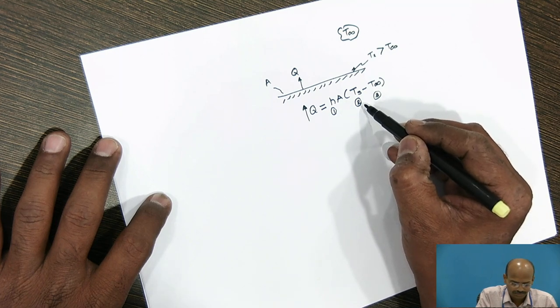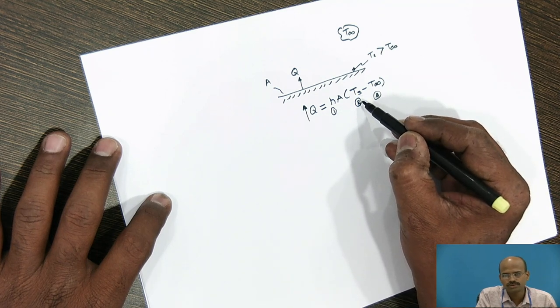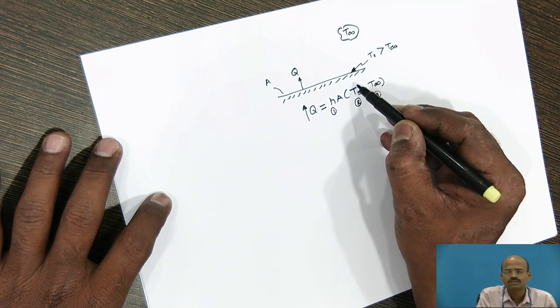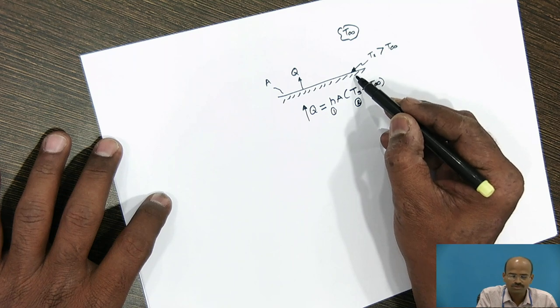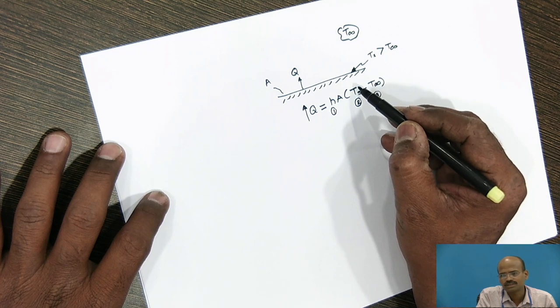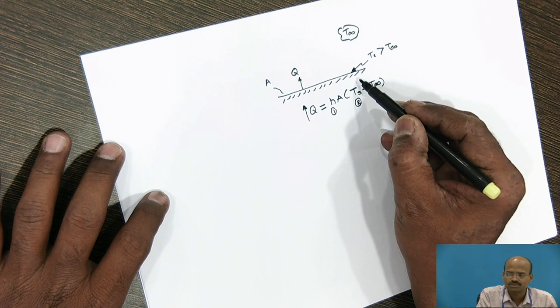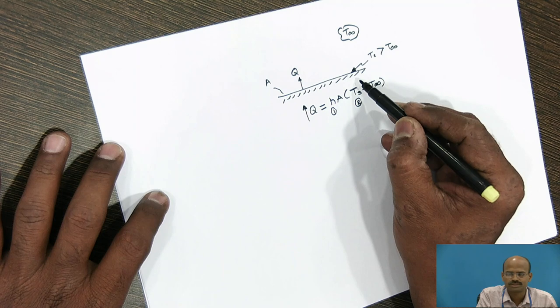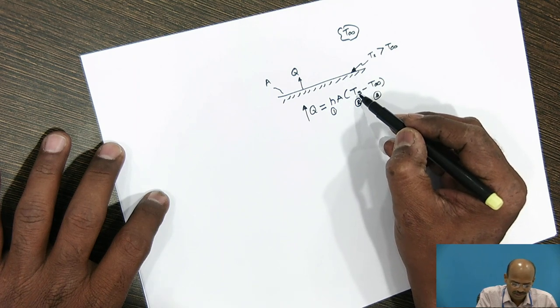Second option to make this maximum is to increase the Ts. As we know, the Ts, that is the surface, will have the same temperature, isothermal temperature, which is not in our hand. It depends upon the application. For example, in the condenser, the condenser pressure is constant means the tube which is used for the condenser will have the constant temperature. So, this also, we cannot change, that is increase.